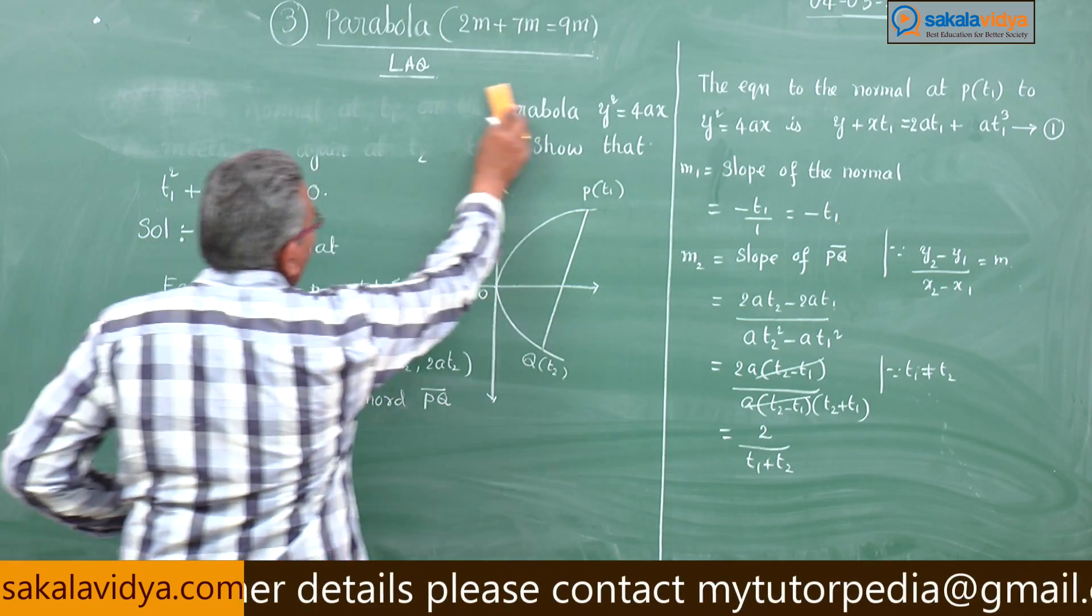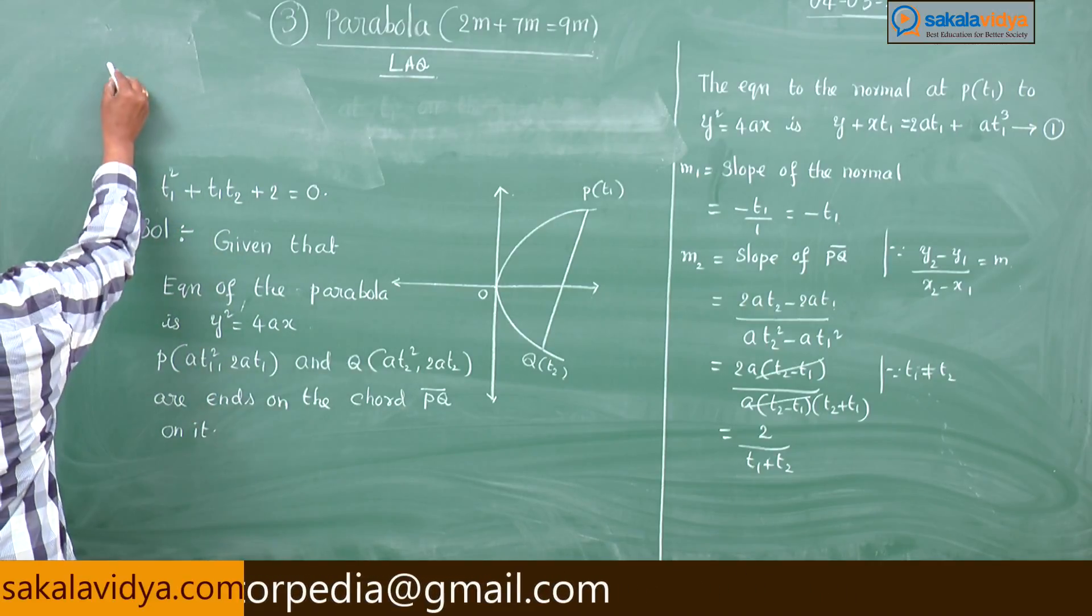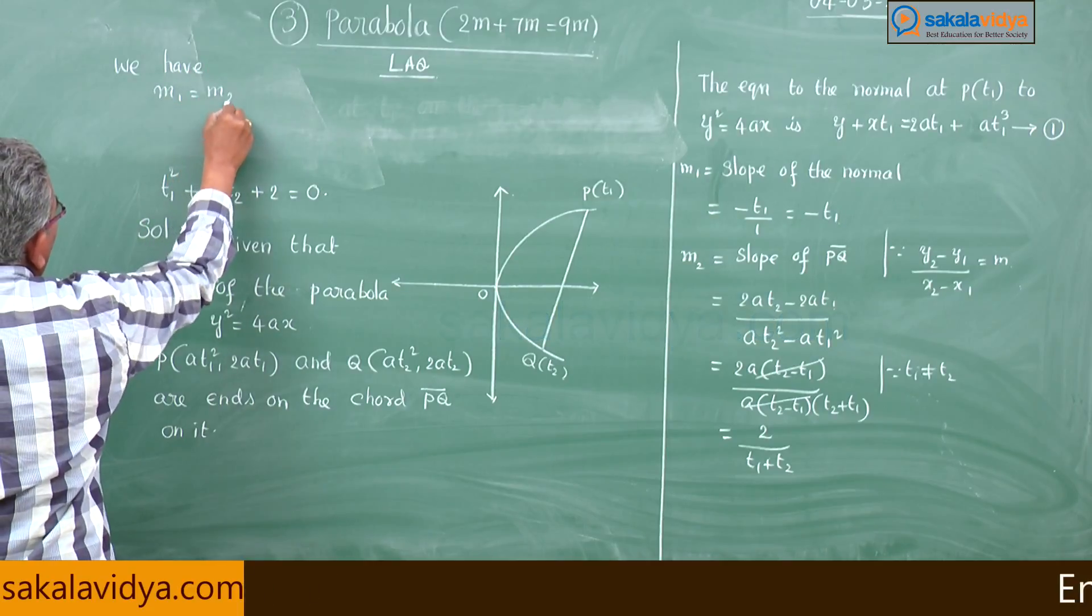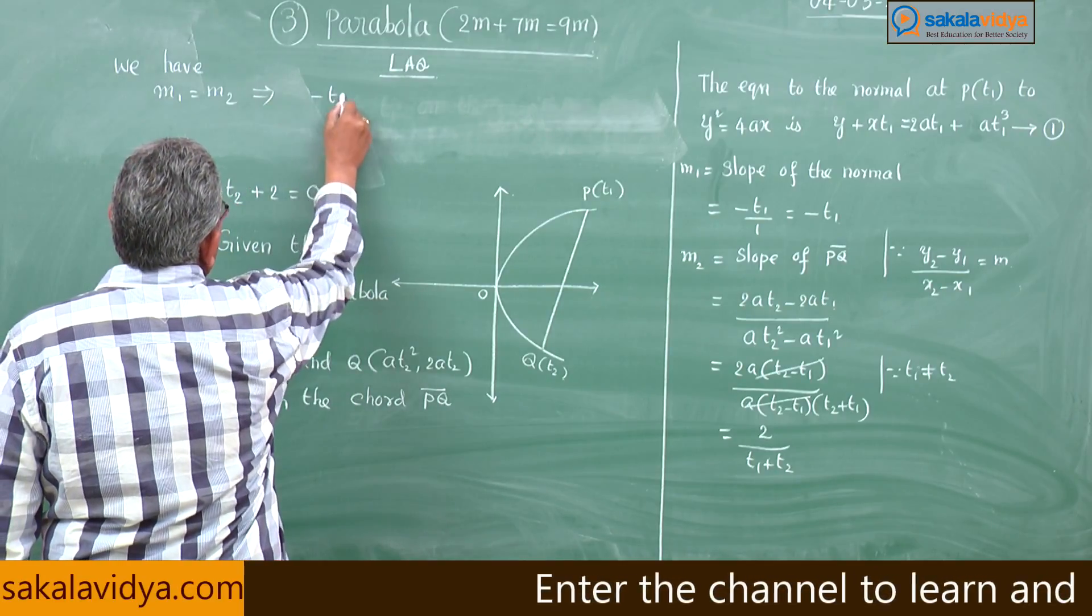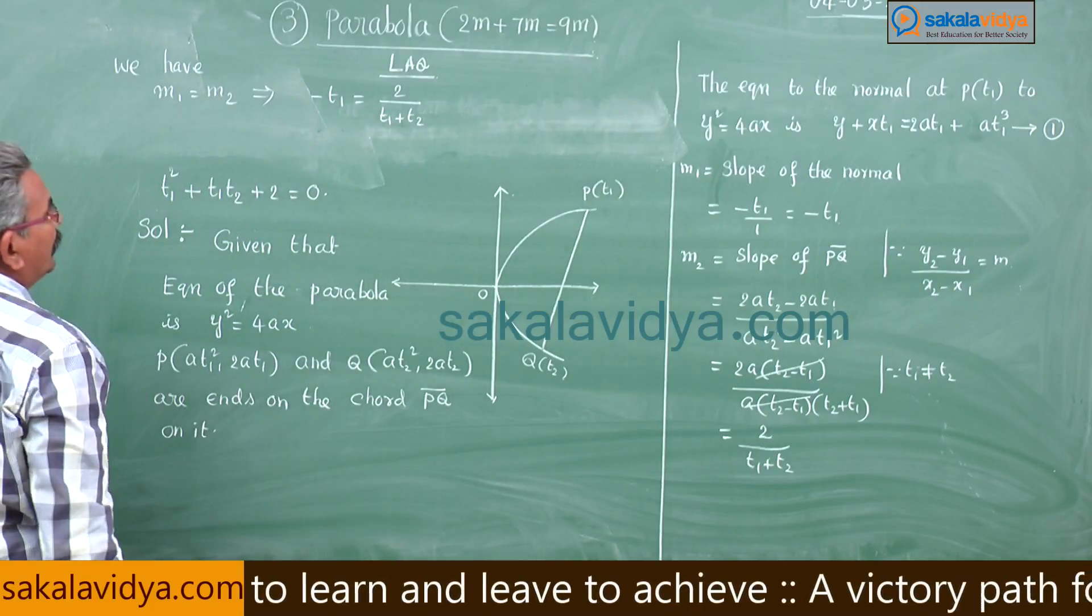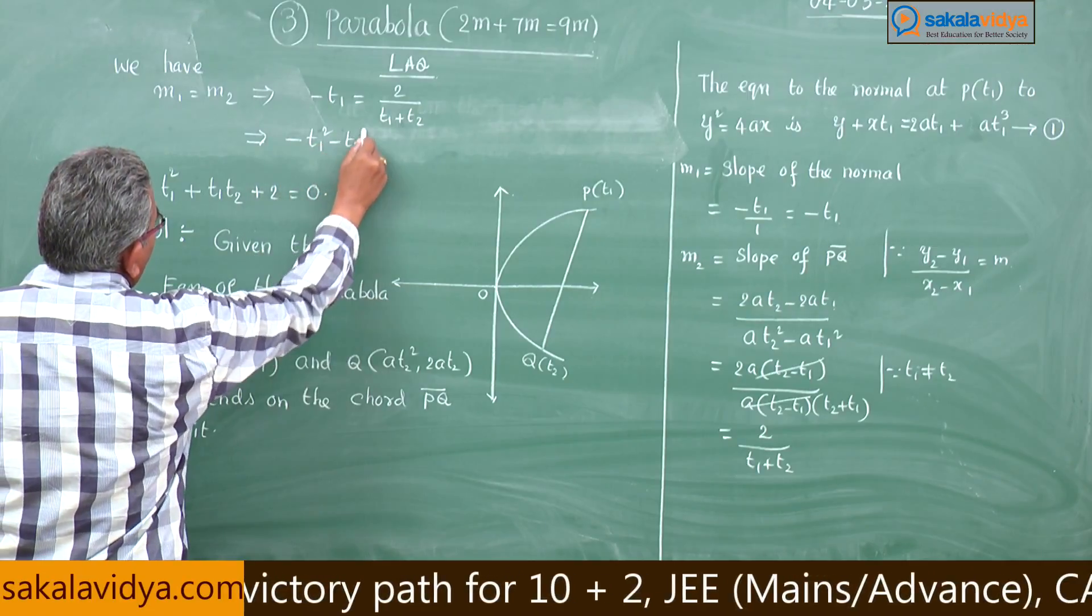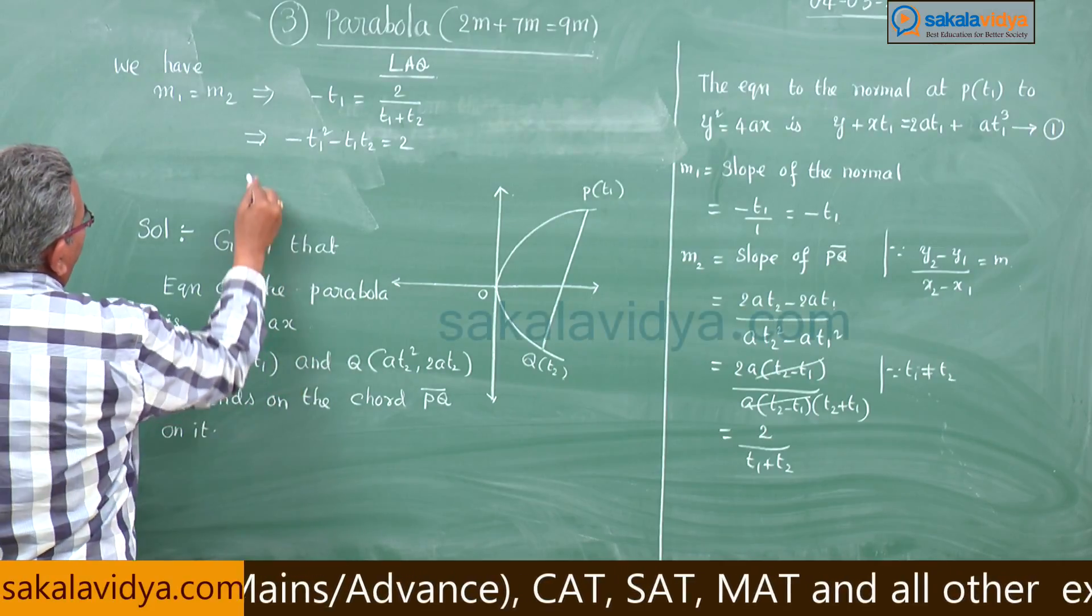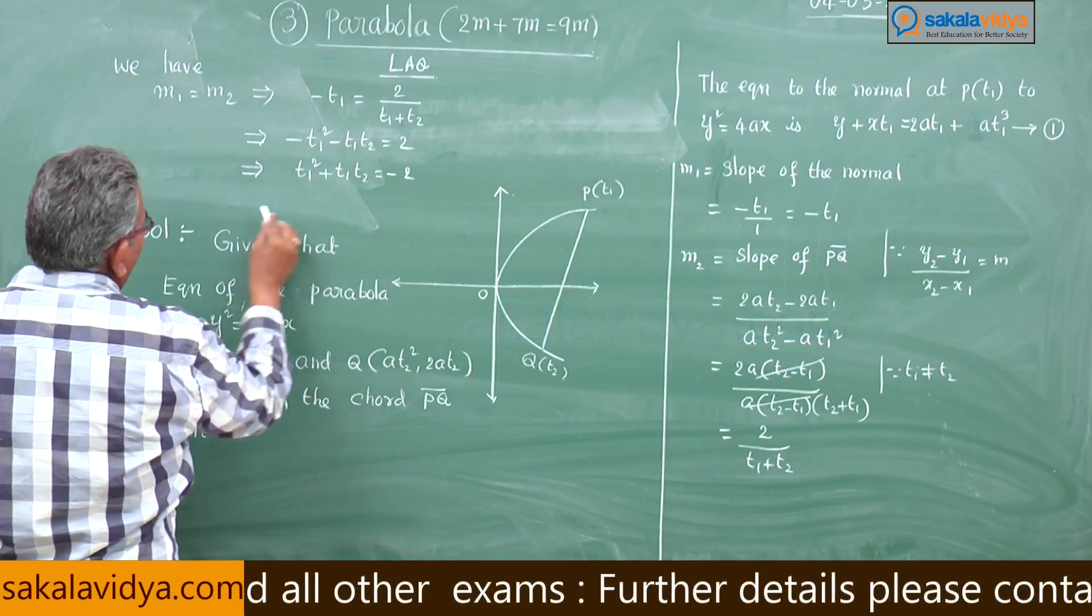Now we get m1 is equal to m2. That implies minus t1 is equal to 2 by (t1 plus t2). Just cross multiply. If you cross multiply, minus t1 squared minus t1·t2 is equal to 2. Multiply with minus. What do you get now? t1 squared plus t1·t2 is equal to minus 2. Therefore,